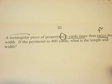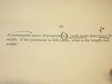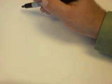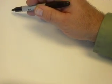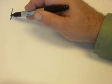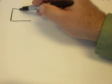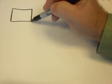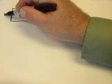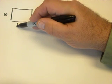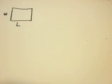So we've got a couple different things here to work with. One of the first things I want to do is draw what we have. I'm going to draw roughly a rectangular piece of property. We know the length and the width. I'm going to put this as the width — the short side is the width. The longer side is the length. We don't know what those are.